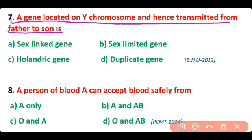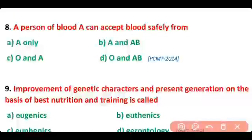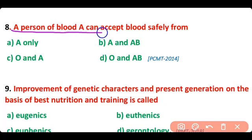Question number 7. A gene that is located on the Y chromosome and hence transmitted from father to son is called a holandric gene or Y-linkage gene. So correct answer is option C. Holandric genes can be transferred from father to son only.